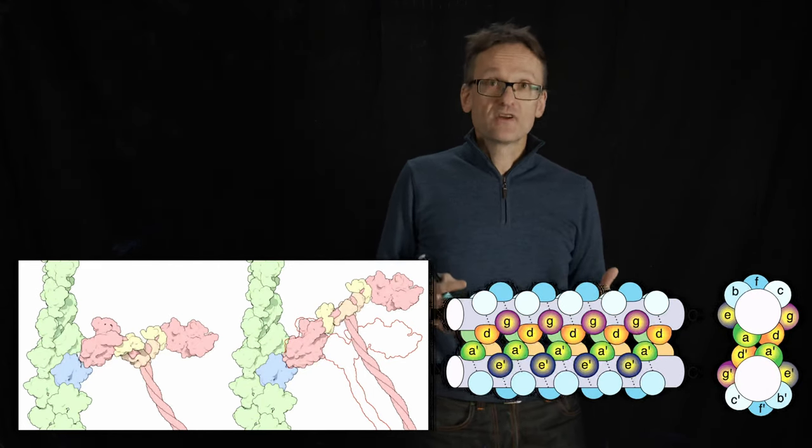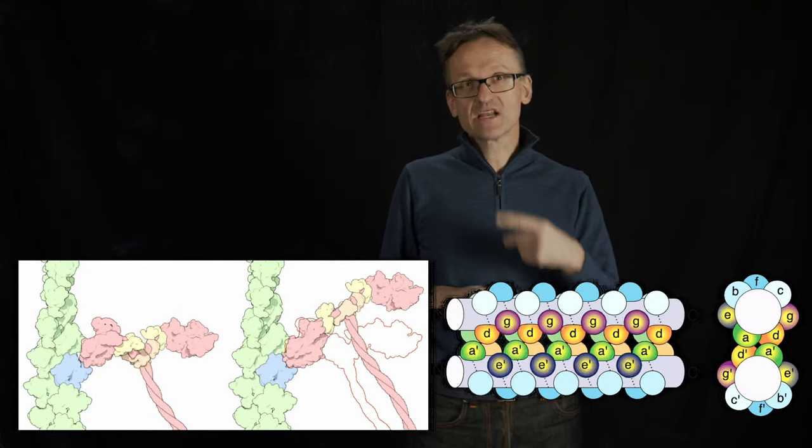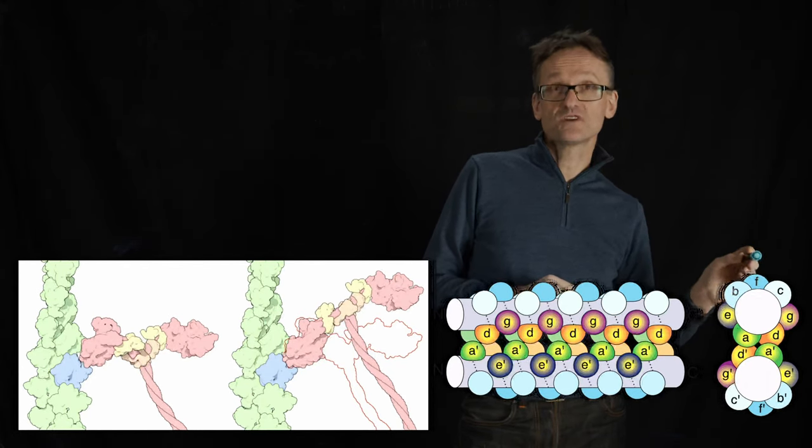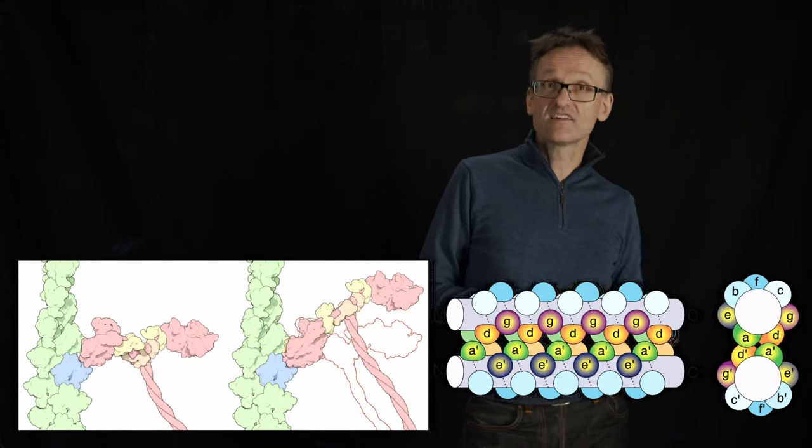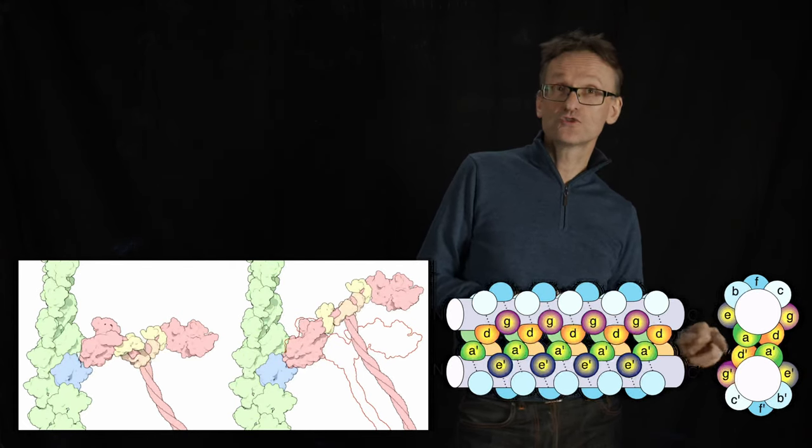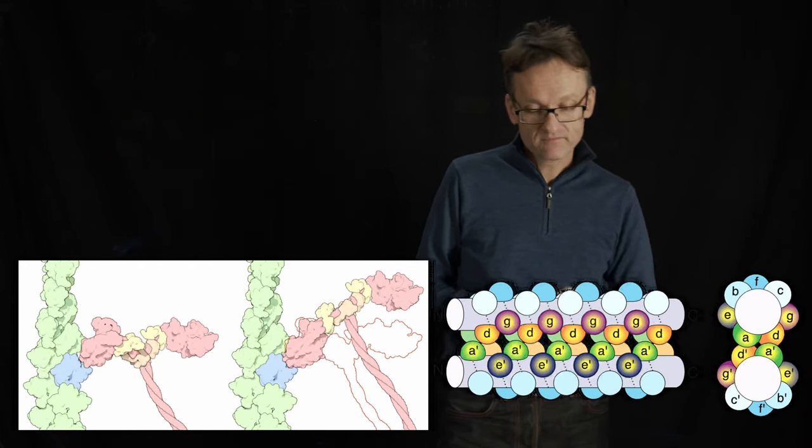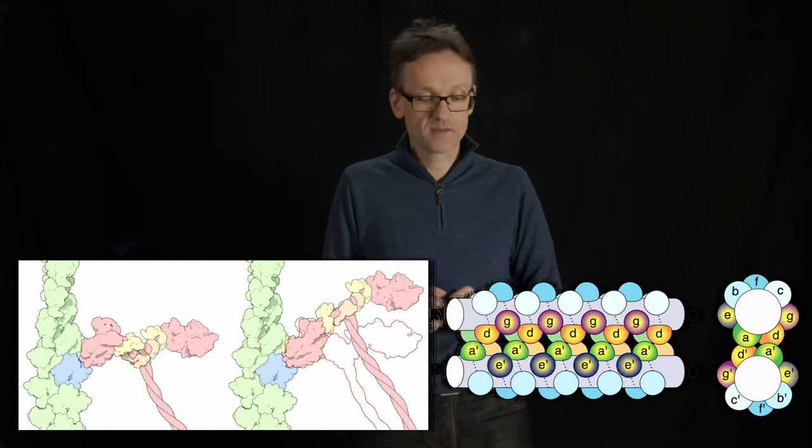We occasionally illustrate this with so-called helical wheels. This is not quite strictly a helical wheel. I'll show you a better one soon. But if I'm looking down the helix here and then I just draw the residues here, one, two, three, four, five, et cetera, then you can see from the side here what residues should be hydrophobic and what residues should be hydrophilic. Otherwise, it might not be obvious if you put like every three or four residues in a particular pattern.